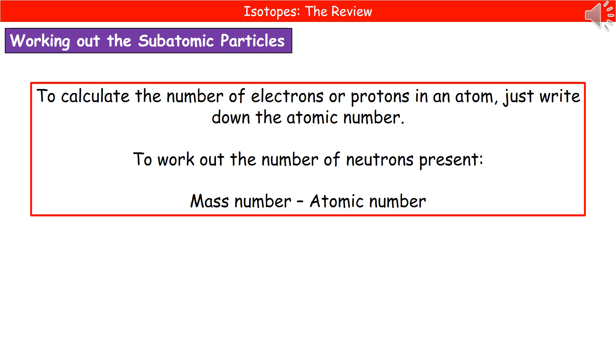If they ask you to work out the number of neutrons, then again, you get your periodic table, you find the element, you find the mass number, and then you take away the atomic number from that. And that will just leave you with how many neutrons there are. So that should be a nice, easy mark should it come up again on your exams.